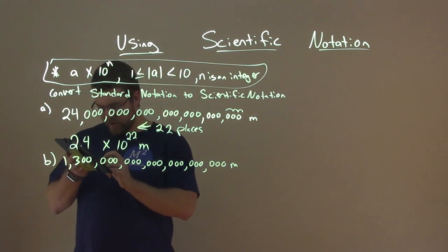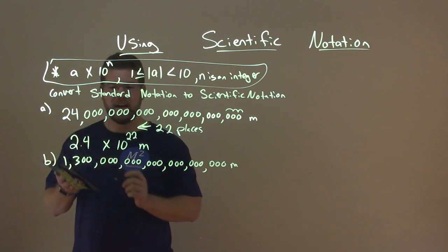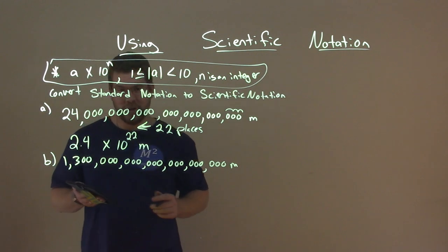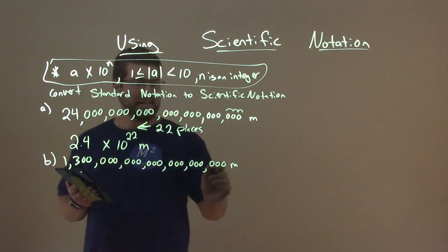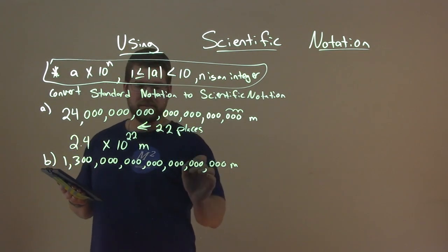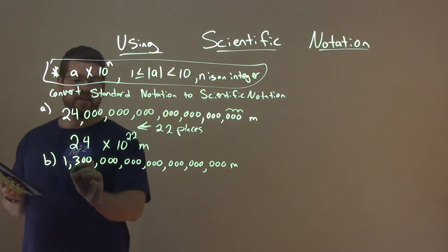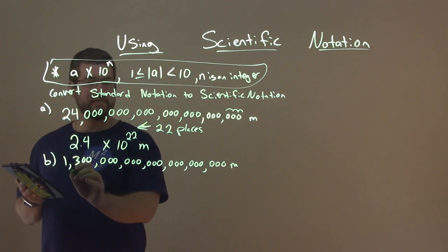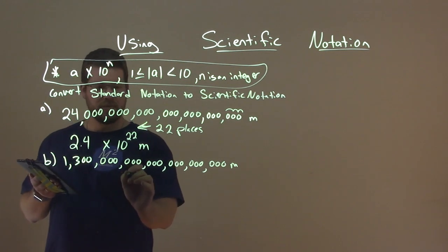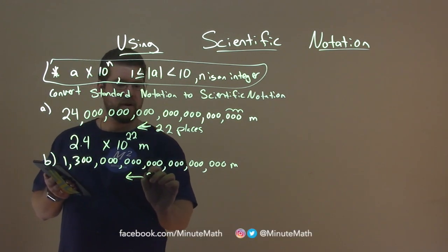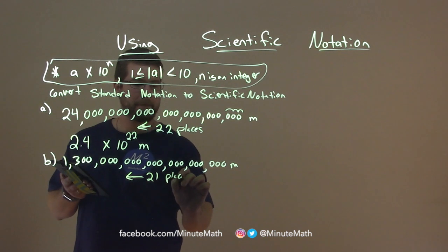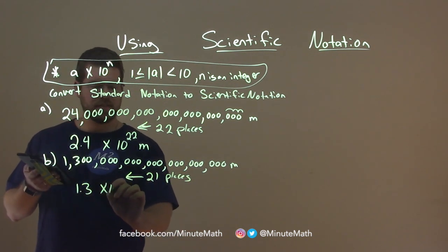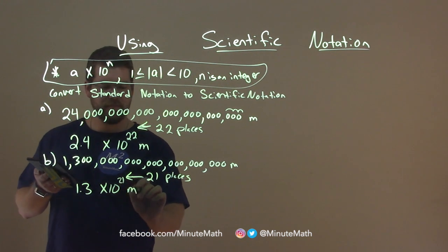So, from here, that's 21 decimal places that we would go over to get to this spot. So we would have 21 places, and so it's 1.3 times 10 to the 21st meters. Not too bad.